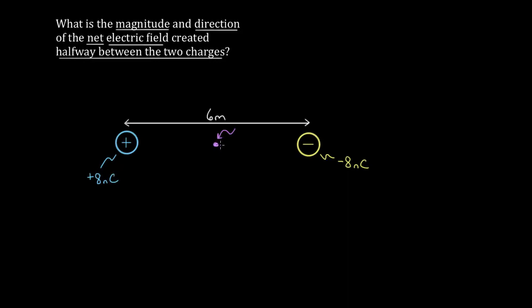At first you might think you should just get zero, right? It's tempting to say the electric field is zero there, because you have a positive eight nanocoulomb and a negative eight nanocoulomb charge and those should cancel. But you have to be careful — that's not true here. To see why, draw the direction of each field at that point. The positive eight nanocoulomb charge creates a field radially away from it, so it points to the right. When finding the field from the positive charge, pretend the negative charge doesn't even exist.